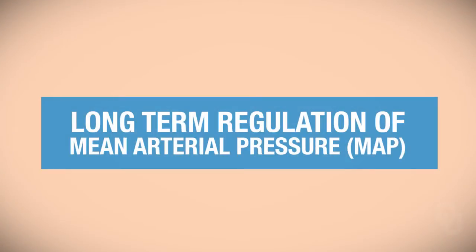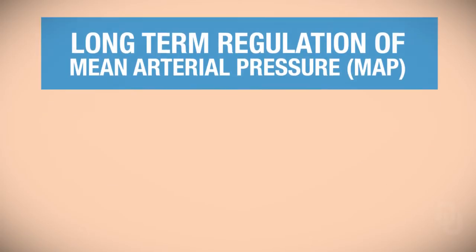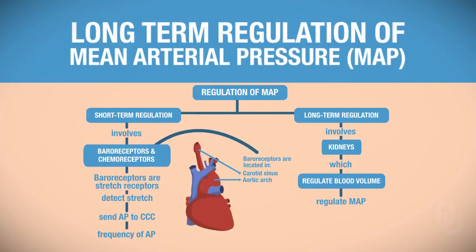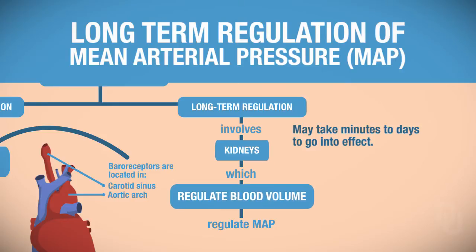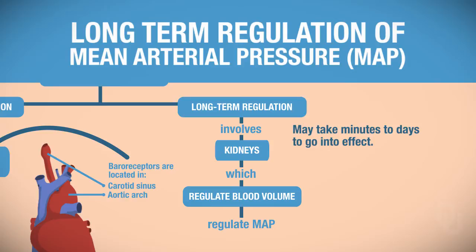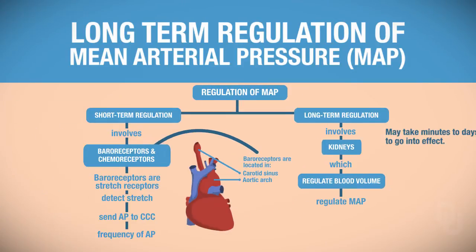In this video lecture, we are going to be focusing on the regulation of mean arterial pressure, specifically the long-term regulation. Just to quickly recap, long-term regulation takes minutes to days to go into effect. It involves the kidneys, which can regulate your blood volume. By regulating blood volume, you can regulate the mean arterial pressure.